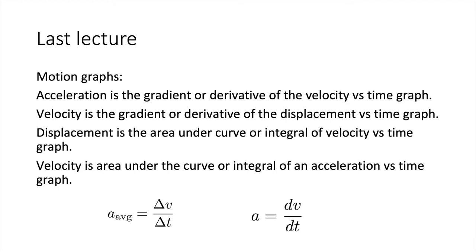We had a look at motion graphs. Acceleration is the gradient — the derivative — of the velocity versus time graph. Velocity is the gradient, and hence the derivative, of the displacement versus time graph. Displacement is the area under the curve, or integral, of a velocity versus time graph. And velocity is the area under the curve, or integral, of an acceleration versus time graph.